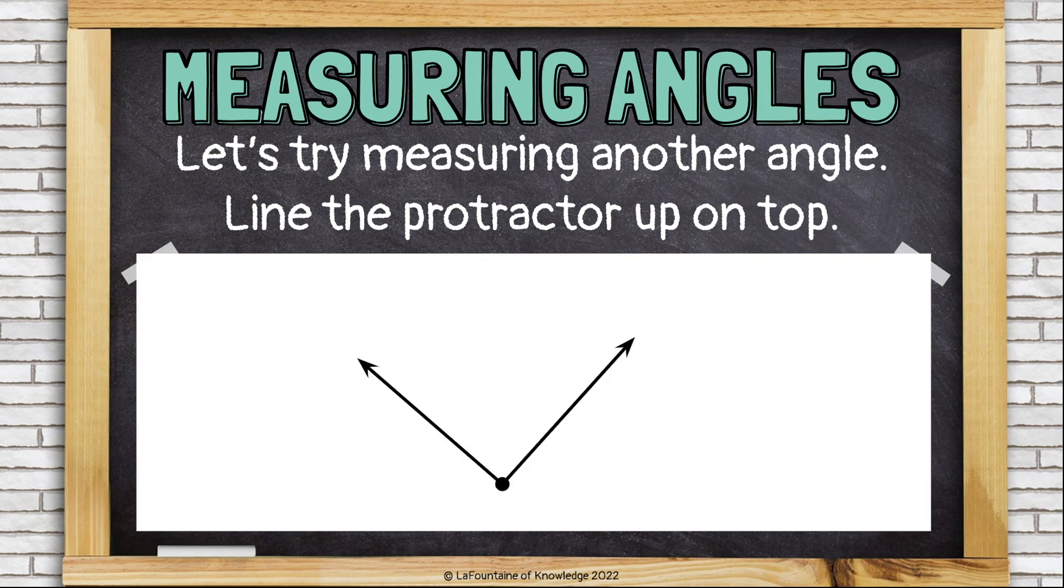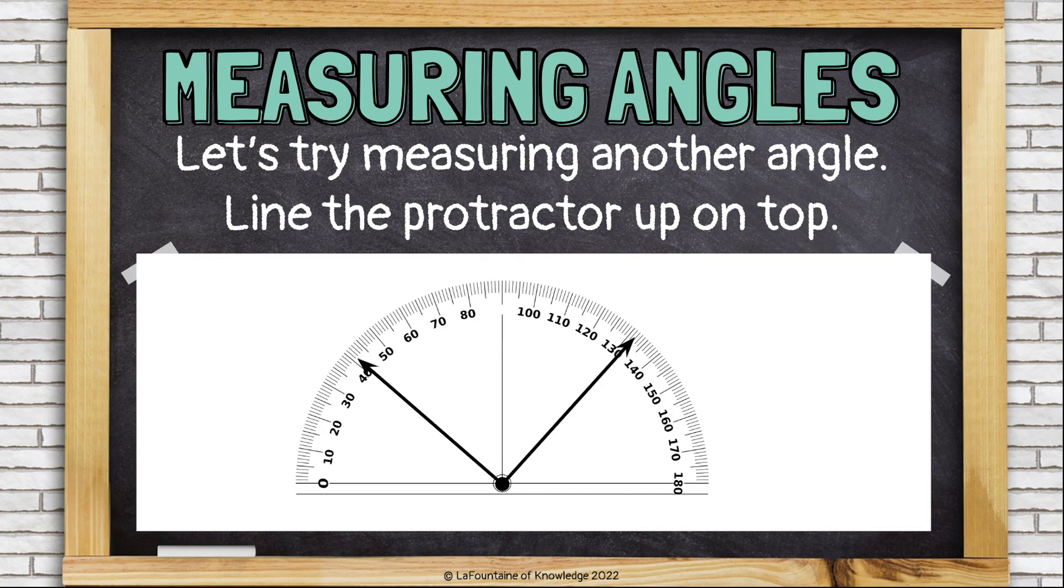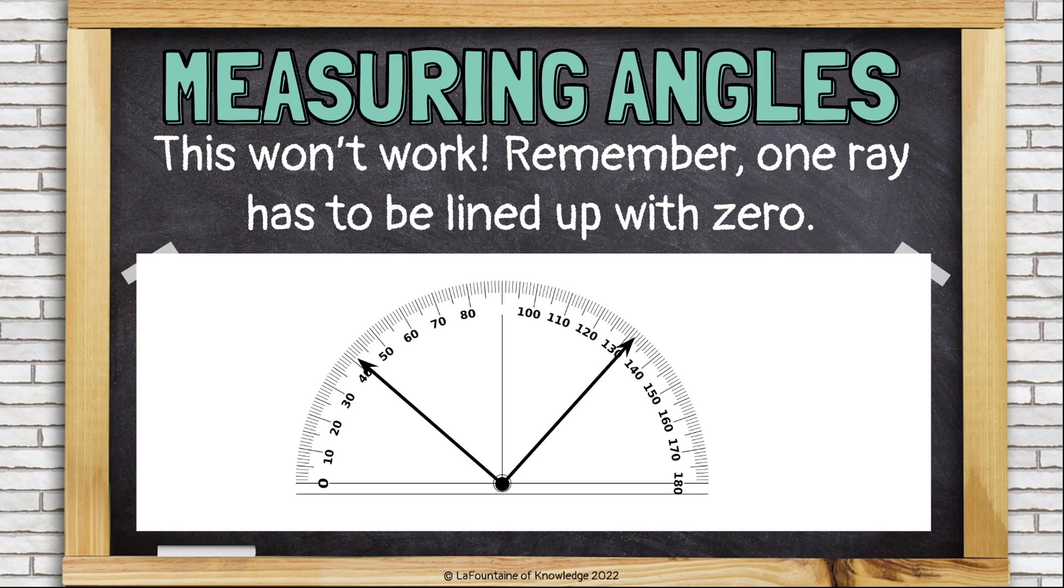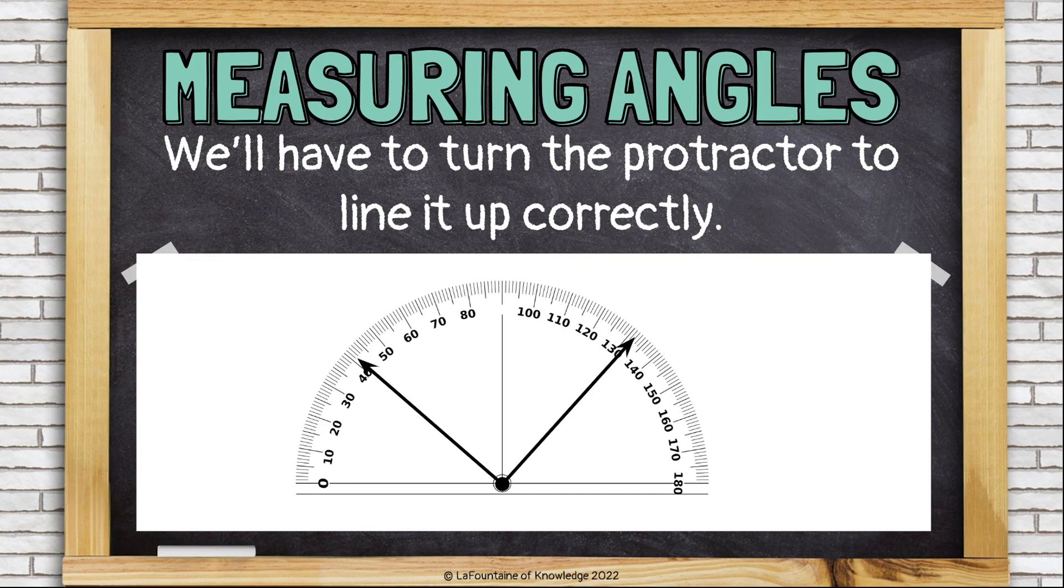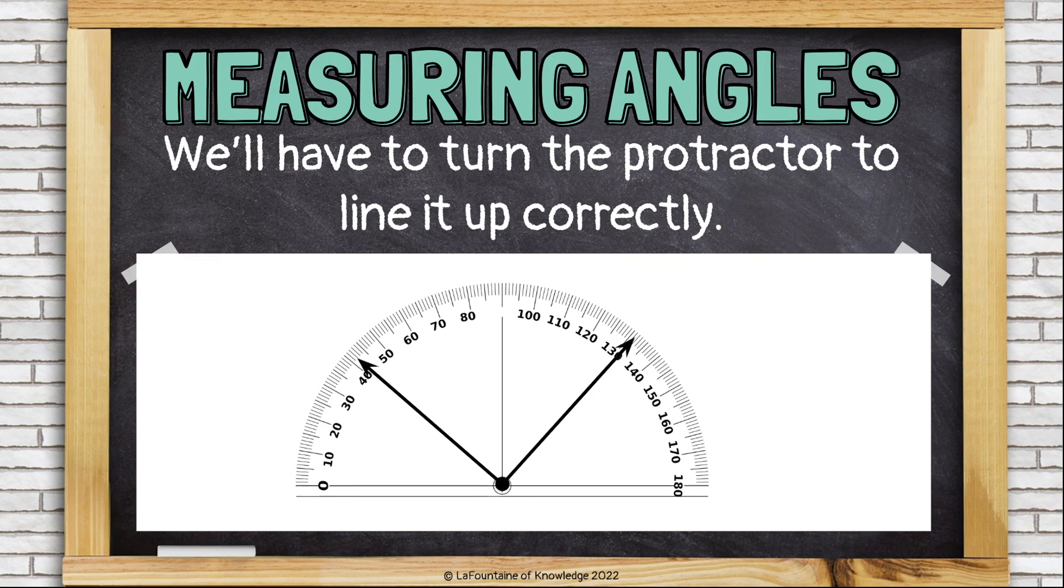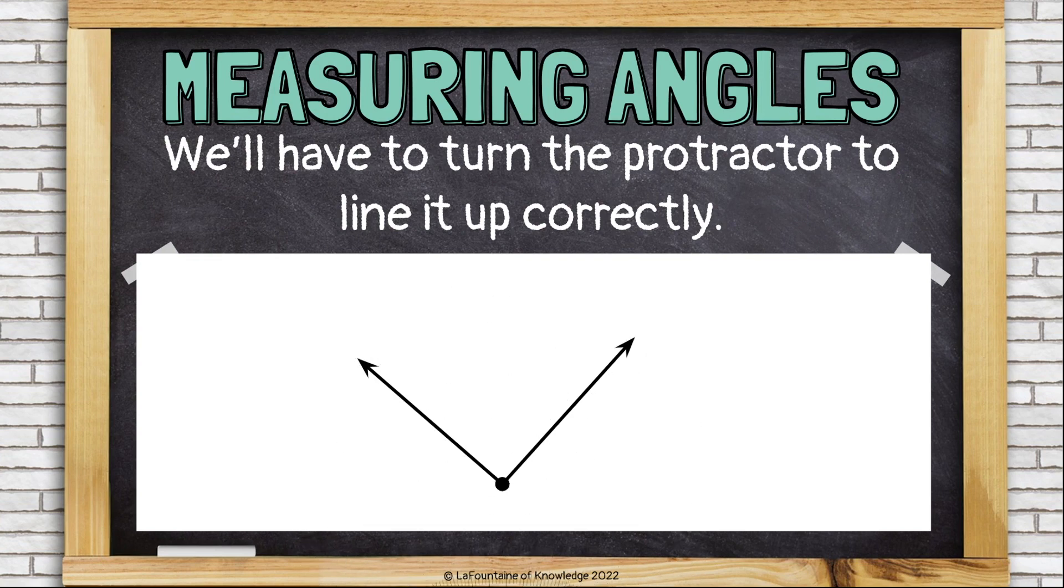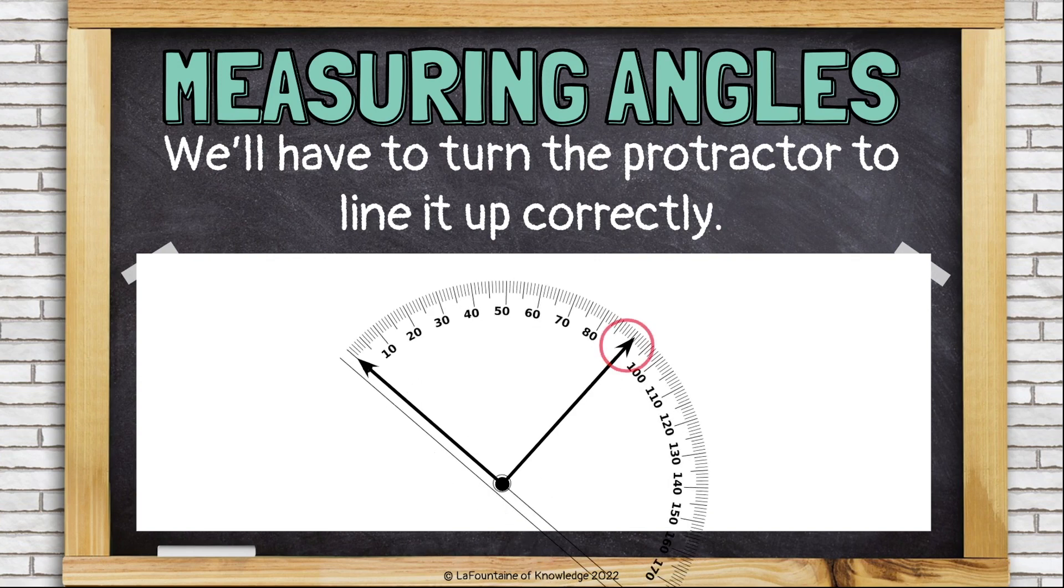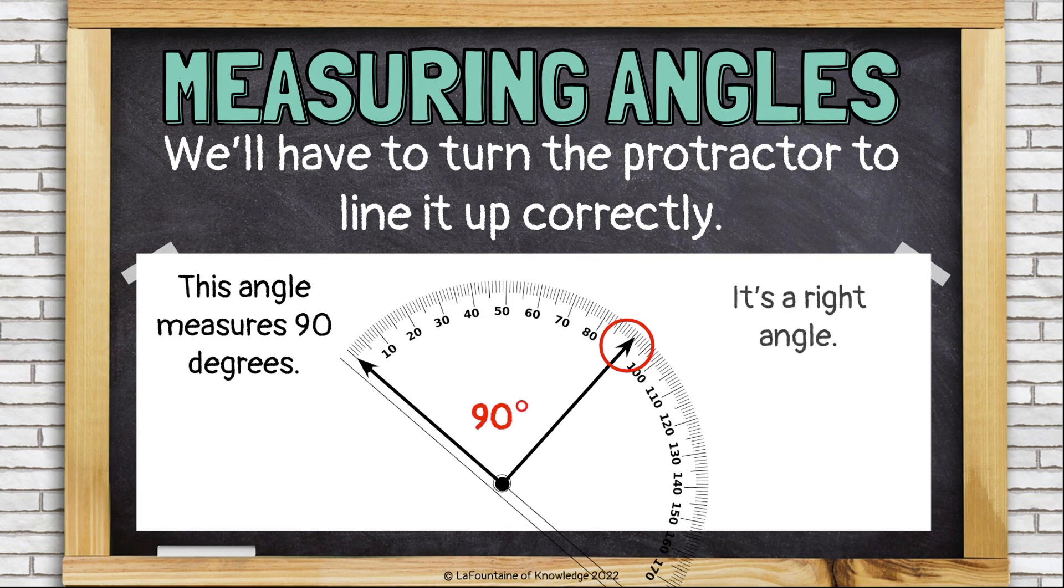Here's another. Line the protractor up on top. This won't work. Remember, one ray has to be lined up with zero. We'll have to turn the protractor to line it up correctly. That's better. Now we can see that this angle measures 90 degrees. It's a right angle.